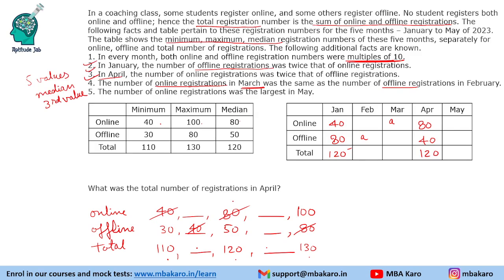The number of online registrations was the largest in May. The maximum online value is 100, so May online = 100. Since the total maximum is 130 and the minimum offline is 30, even putting the minimum offline value of 30 reaches the total maximum of 130. Therefore May offline must be 30 and total is 130, so both 30 and 100 are knocked off the remaining possibilities.